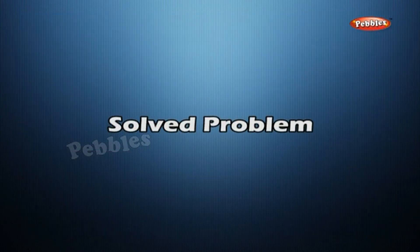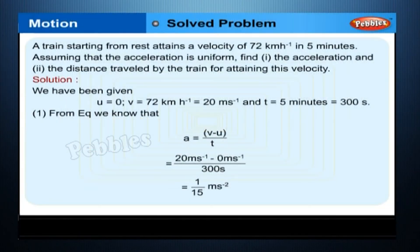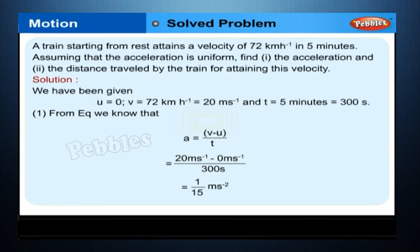Solved Problem 1. A train starting from rest attains a velocity of 72 km/h in 5 minutes. Assuming that the acceleration is uniform, find: first, the acceleration, and second, the distance travelled by the train for attaining this velocity.